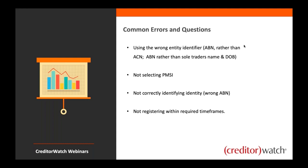The next common error is not correctly identifying the entity you're dealing with — you may be using names or haven't correctly obtained the ABN or ACN from your customer. It's always important to use CreditorWatch and ApplyEasy in conjunction with your PPSR service to make sure you're getting the right details and registering on the right entity. It would be a shame to create the registration correctly but then miss out purely because the wrong ABN was used.